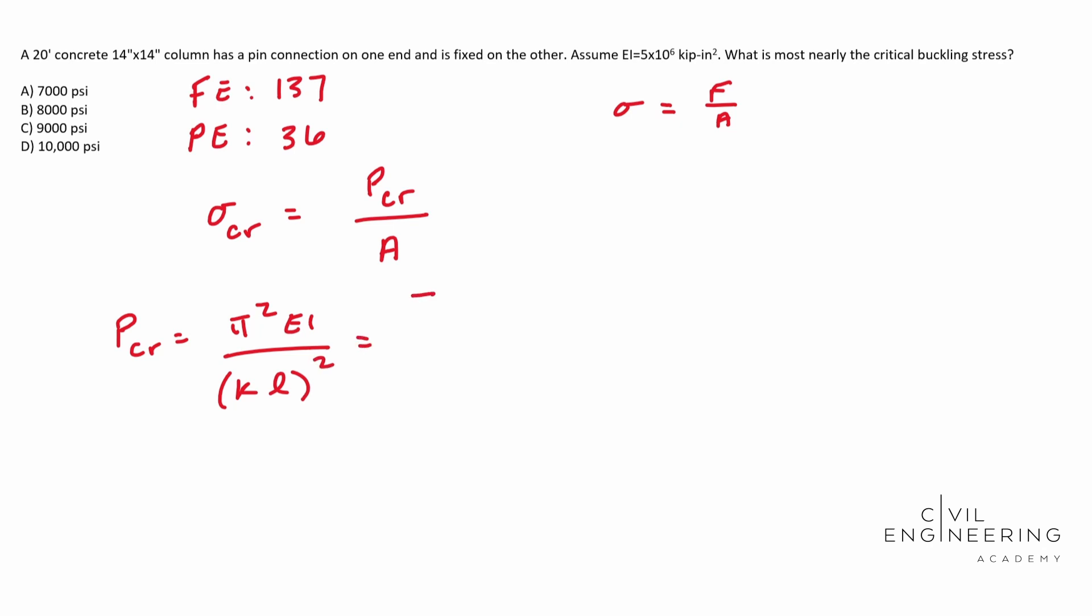So this ends up being pi squared times 5 times 10 to the 6th kips inches squared, over 0.7. We found that from our table there. We multiply that by 20 feet. Then we need to convert feet to inches, so there are 12 inches in a foot.